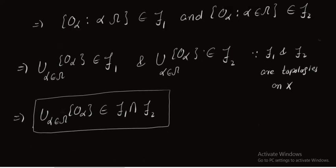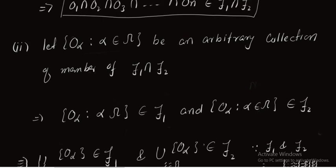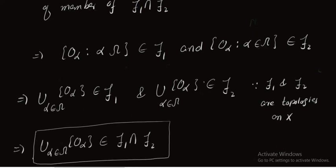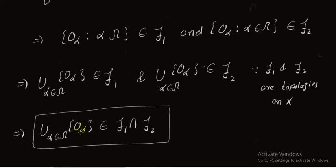So the second condition for the topology is satisfied. We took an arbitrary collection of members of τ1 ∩ τ2 and proved that the union of these members belongs to τ1 ∩ τ2.